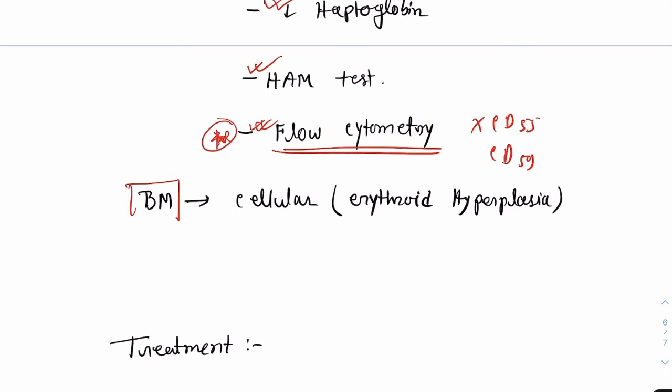If we examine the bone marrow, initially the bone marrow will be cellular and there will be marked erythroid hyperplasia. But in later stages of the disease, bone marrow will become hypocellular and there will be features of aplastic anemia.